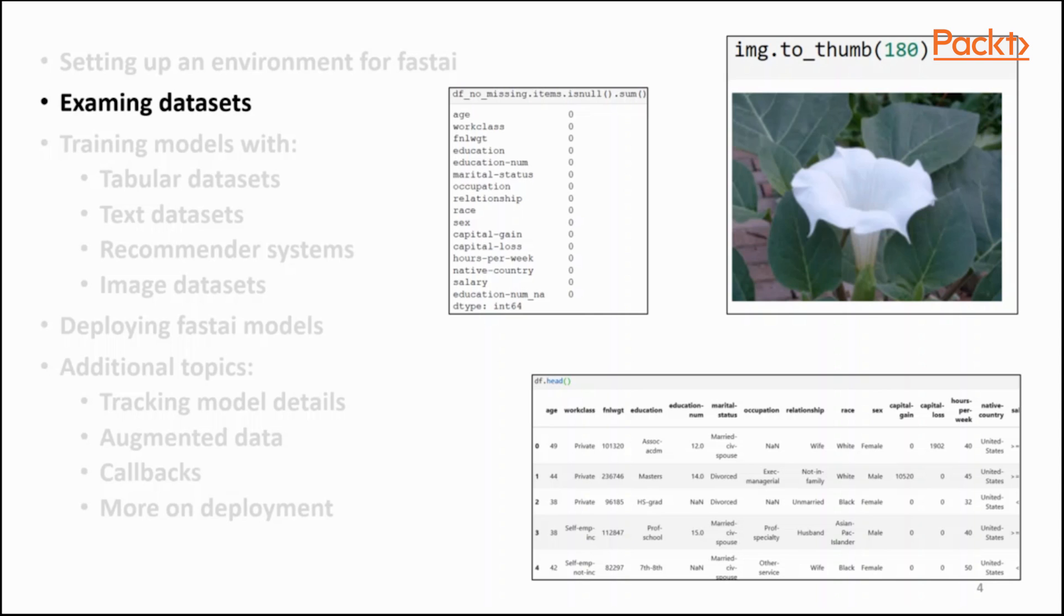You will follow through recipes that demonstrate the features in Fast AI that make it easy to examine tabular, text, and image datasets. You will also learn how to use Fast AI to clean up datasets by, for example, dealing with missing values.